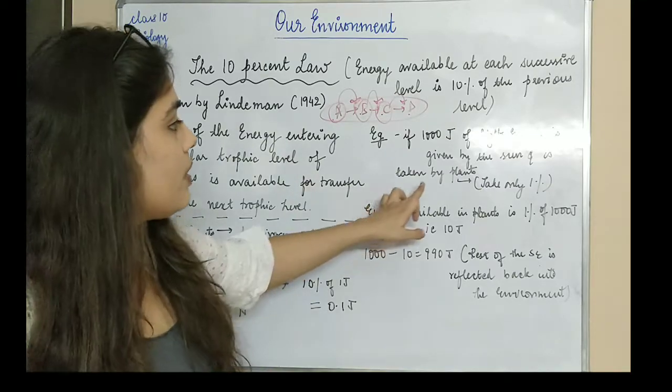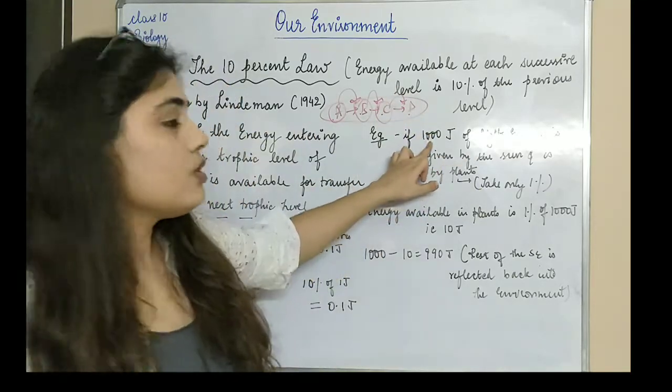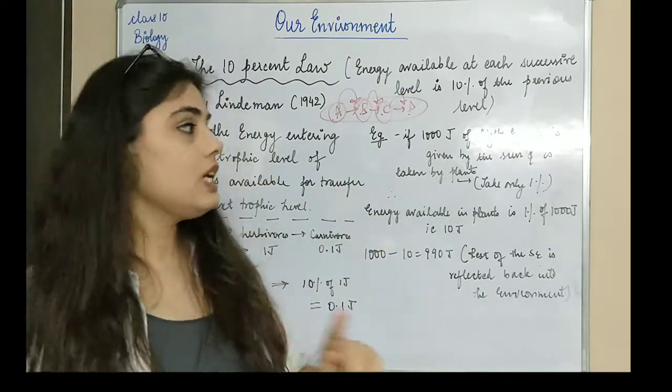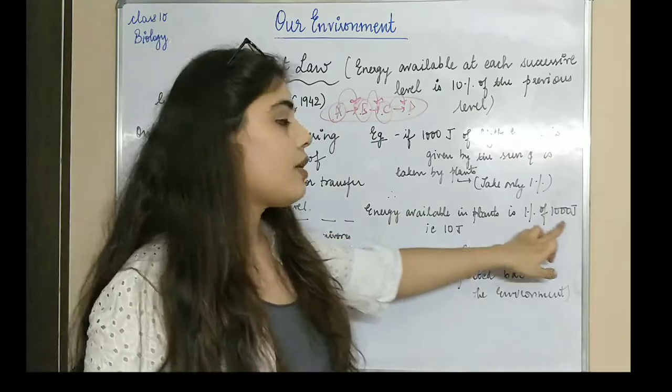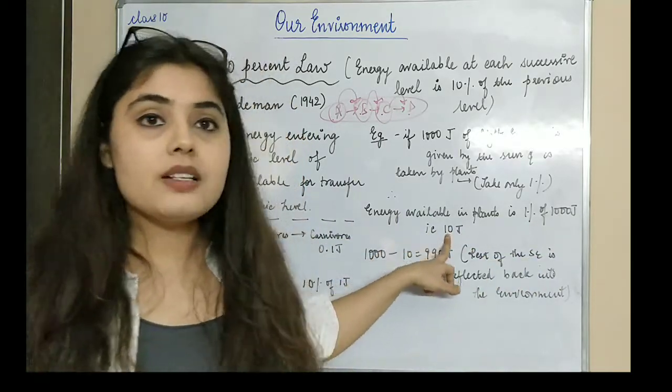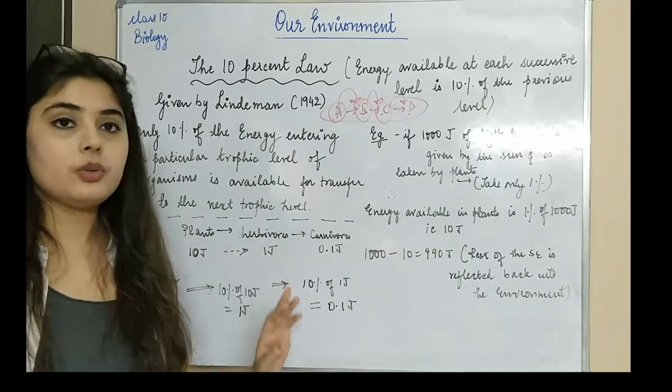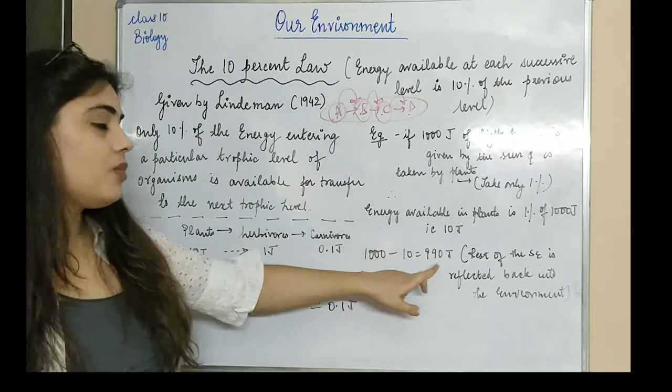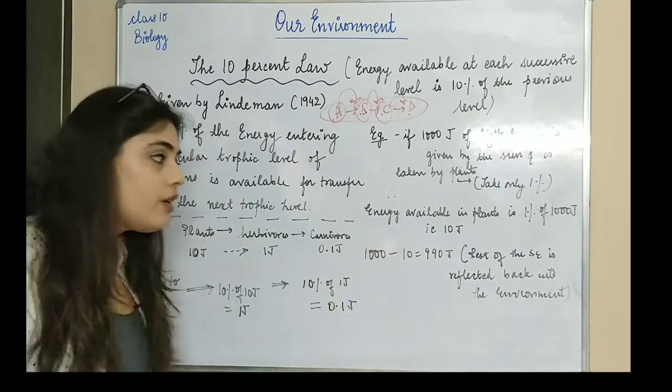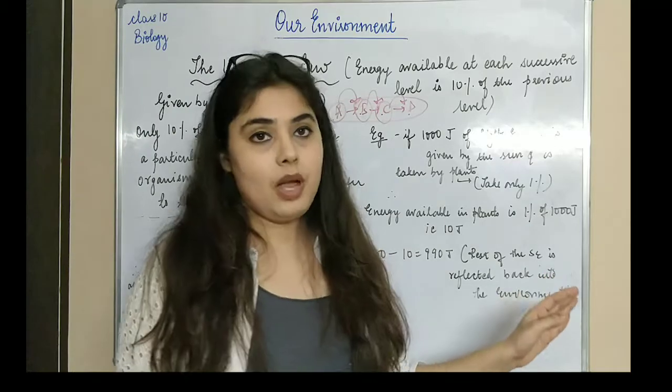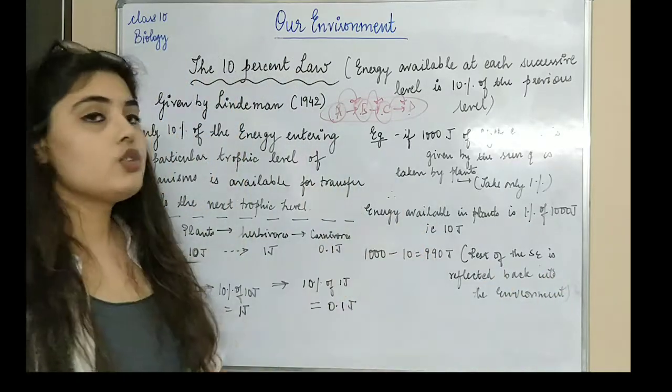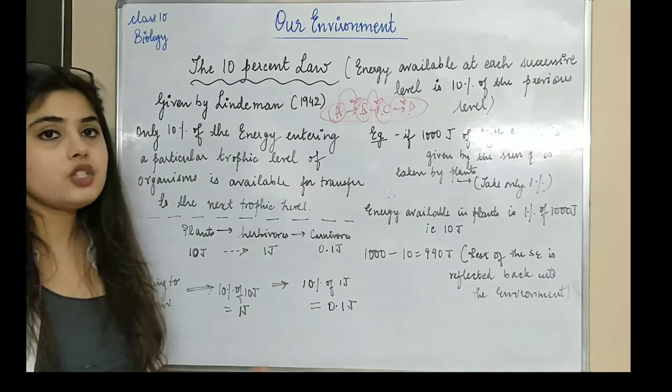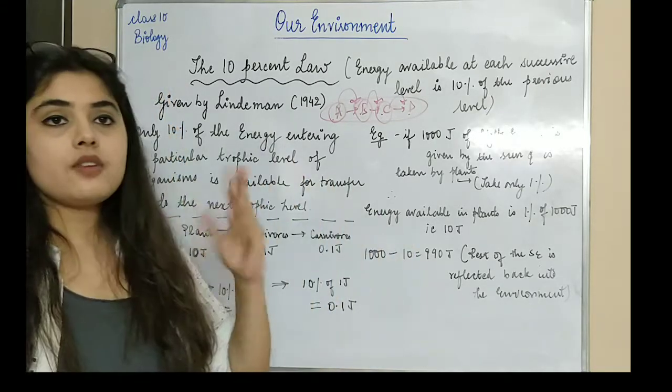The 10% rule starts when the food chain starts - that is when the producers produce the food, and then when the producer is eaten, that's when our 10% energy law starts. So if we have 1000 joules of energy from sunlight, the plant takes 1%. So 1% of 1000 joules is 10 joules. Now the plants have 10 joules of energy. Out of 1000, 10 is taken, so 990 joules is left. That will be reflected back to the environment because only 10 joules of energy is being utilized by the plant, and they're converting that solar energy into chemical energy.